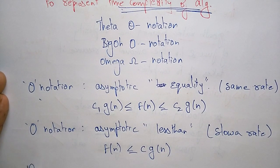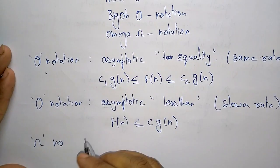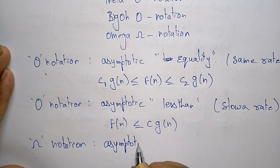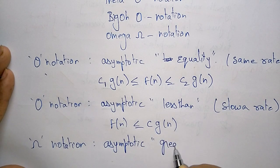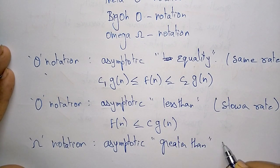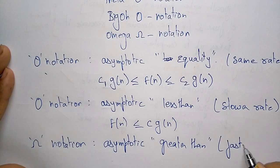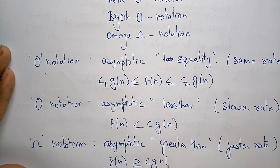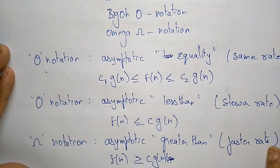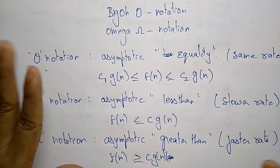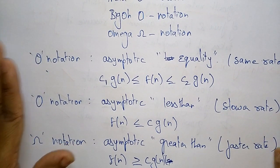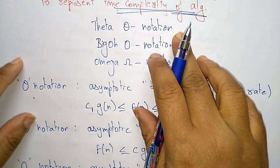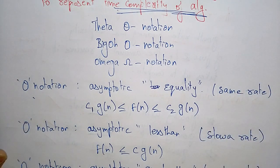Now coming to Omega notation. For Omega, the asymptotic relationship is greater than — meaning the growing rate is a faster rate. The equation for Omega is: f(n) ≥ c·g(n). These are the notations used to calculate the time complexity of an algorithm. Now let us discuss each notation one by one — first Theta notation, then Big O, and Omega in the next video. Thank you.